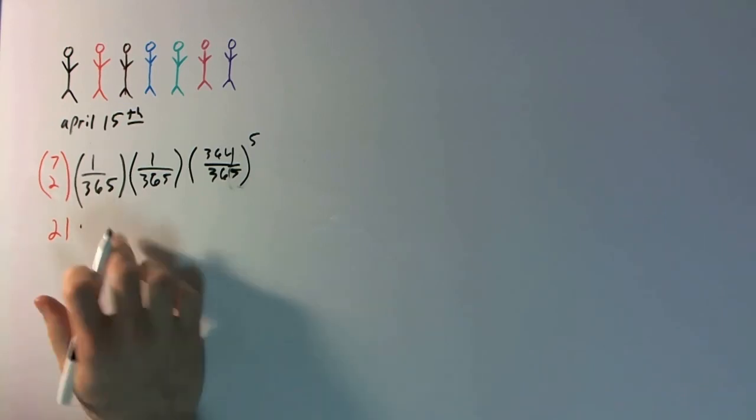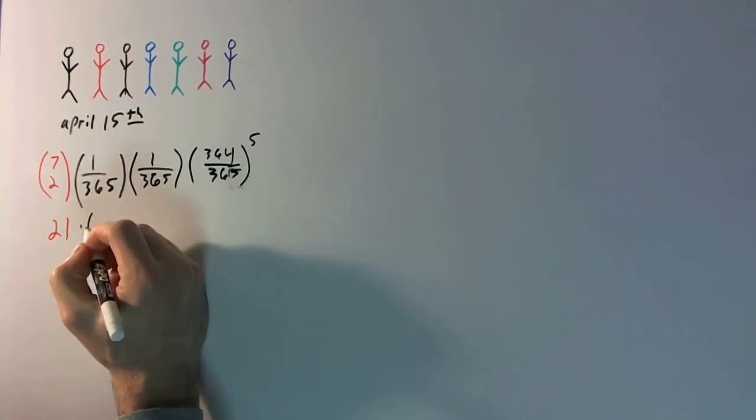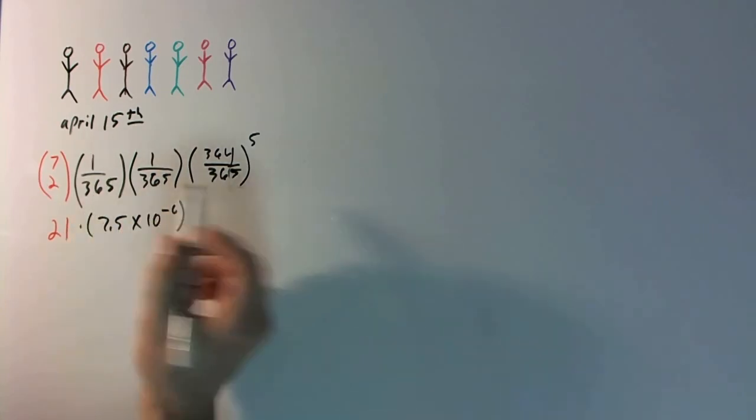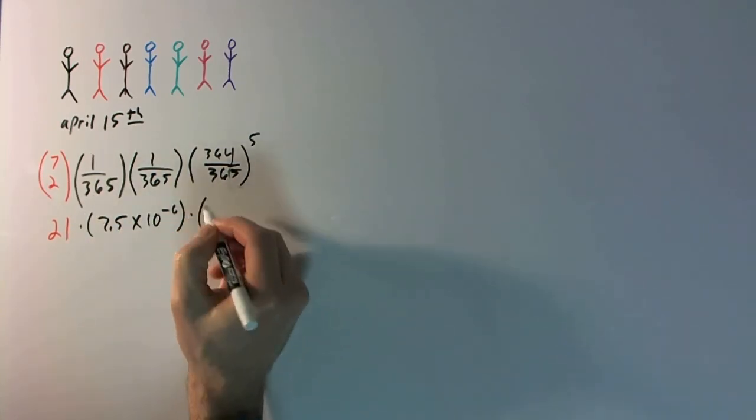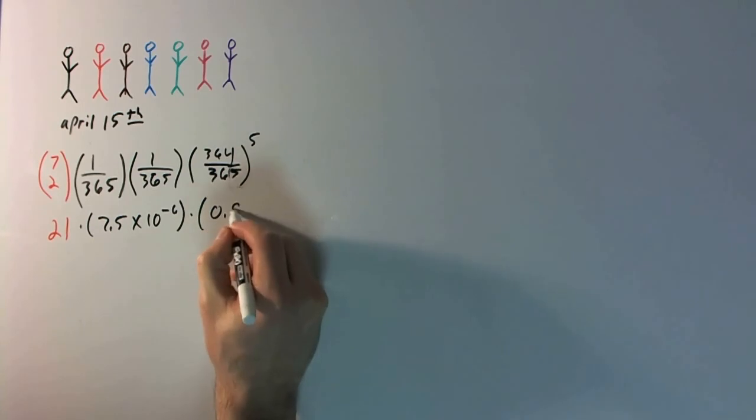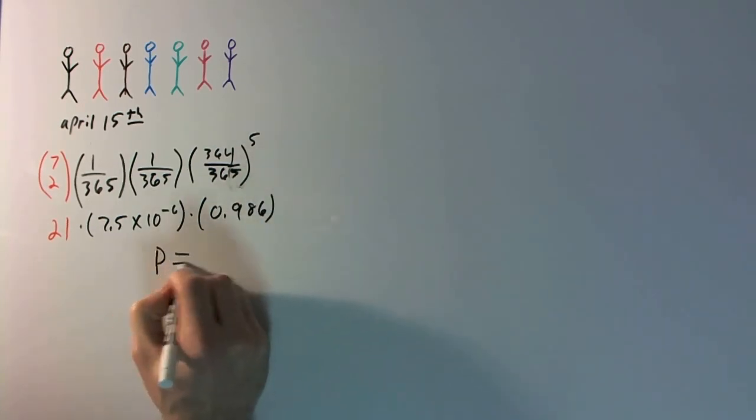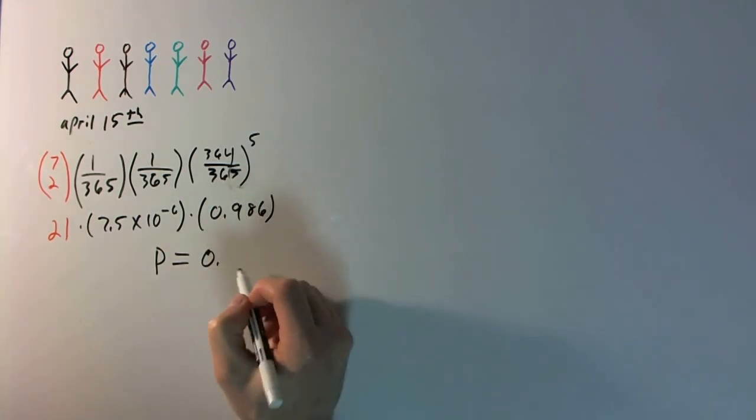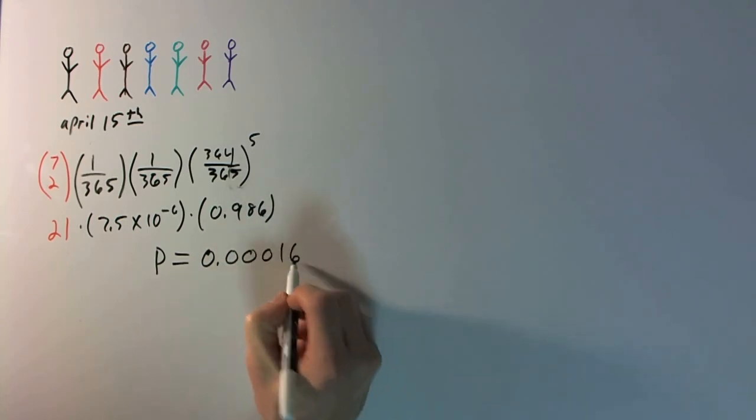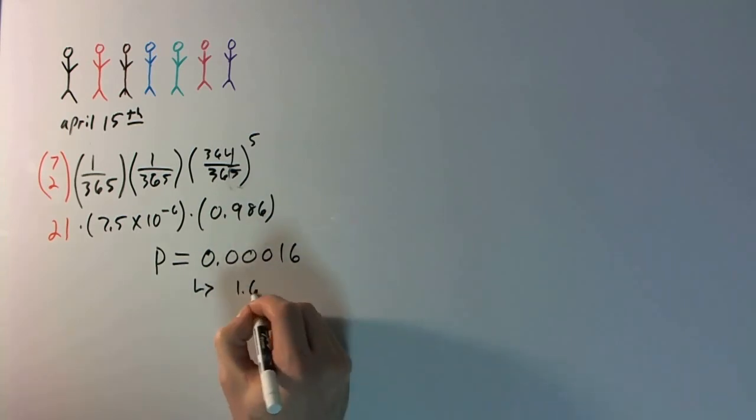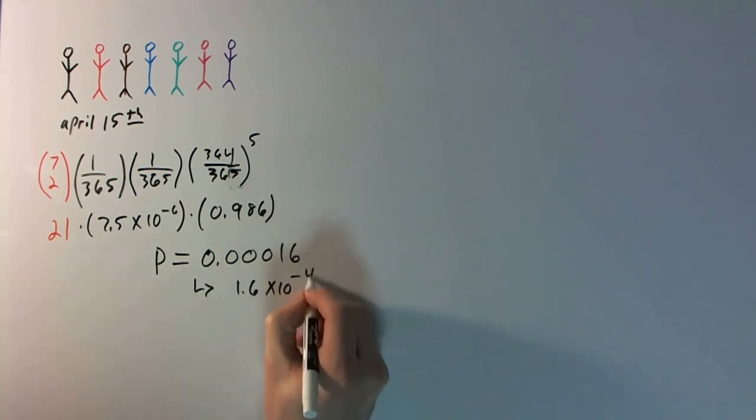This ends up being, if I did my arithmetic correctly, this is 7.5 times 10 to the negative 6. These two numbers here. And then we're going to multiply that by this quantity here, which is 0.986. And then you get the probability is going to be equal to 0.00016. Or if you like scientific notation, that's 1.6 times 10 to the negative 4.